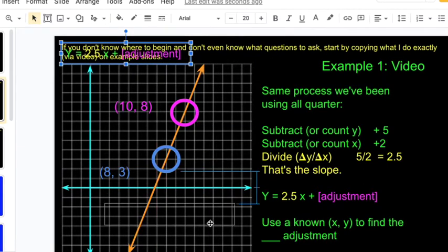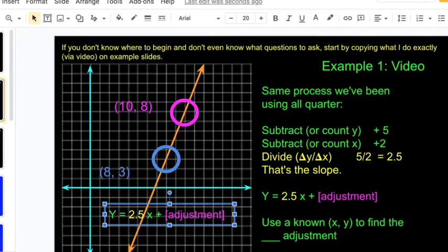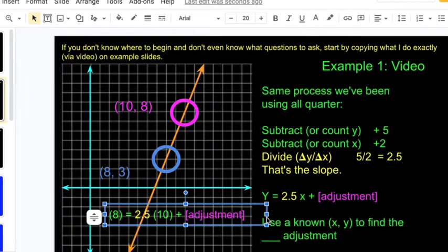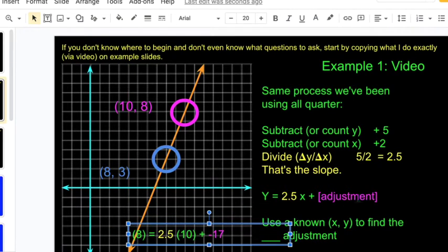Take my equation. I'm going to use x equals ten. And when x equals ten, y is supposed to equal eight. All right, so two point five times ten, that is twenty-five plus an adjustment should give us eight. We need to subtract seventeen, right? Twenty-five minus seventeen is eight. So that's our adjustment. Minus seventeen.